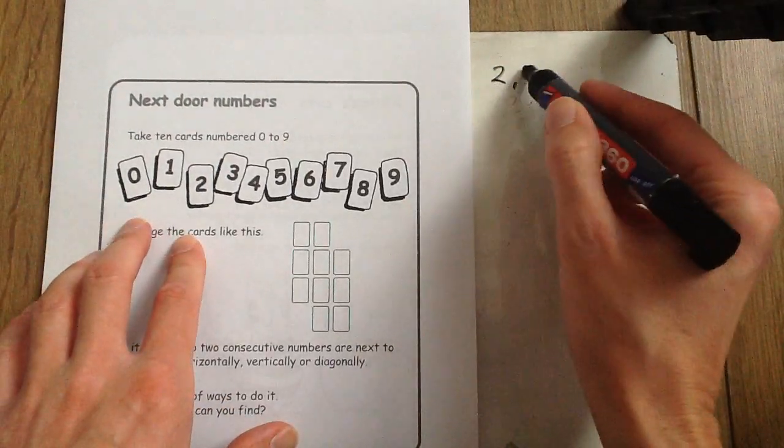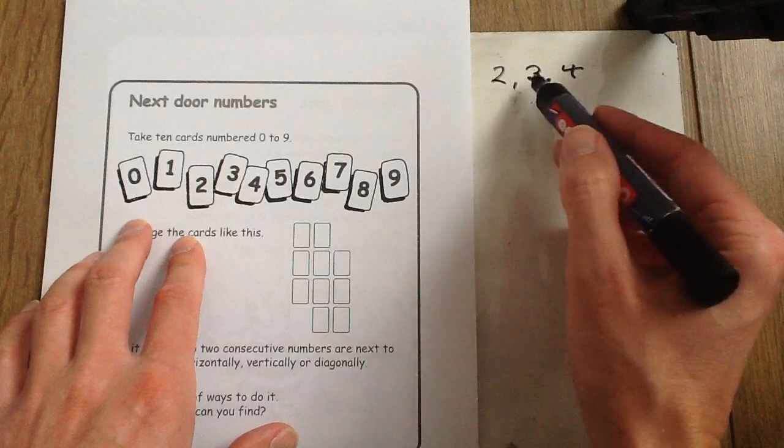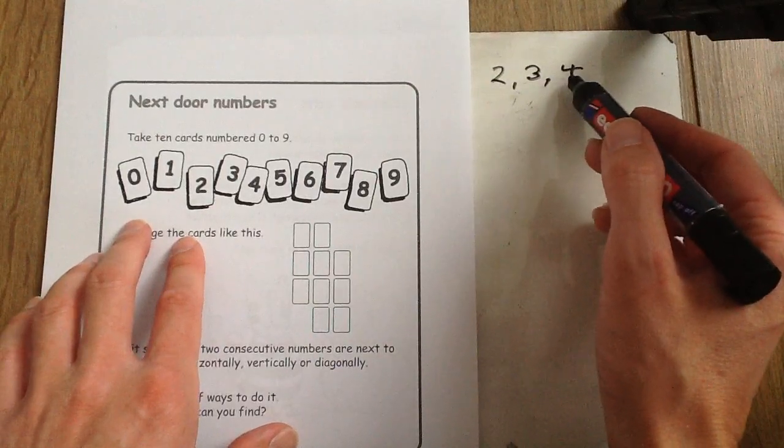It's numbers like these: 2, 3, 4. So numbers that come in order one after the other.